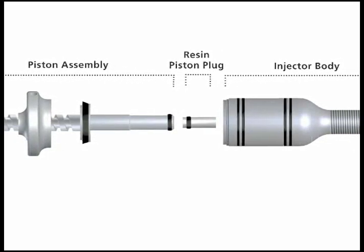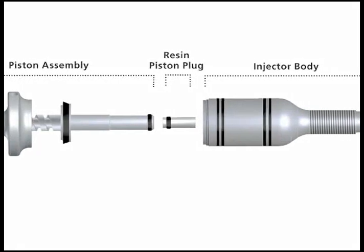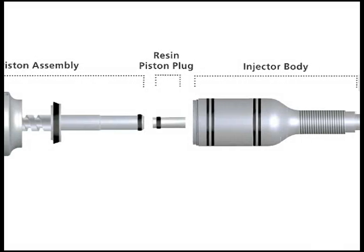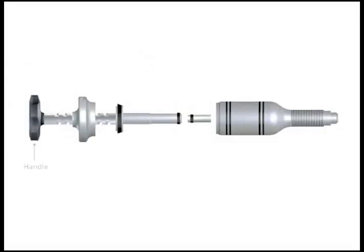The piston assembly, the resin piston plug, and the injector body. Each of these three main components can be broken down even further. We start with the handle, then the cap, the upper piston seal, the resin chamber, the lower piston seal, the resin piston seal, and finally, the outer white seal.